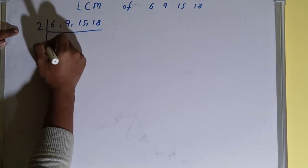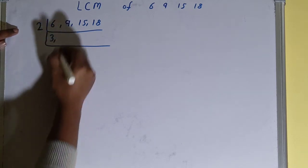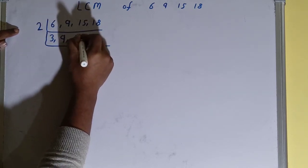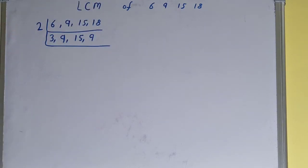This 6 will become 3 on dividing. This 9 is not divisible, so we'll just copy it down. This 15 is not divisible, so we'll copy it down. This 18 is divisible, so it will become 9. Again, if we check, is any of the numbers divisible by 2? None of them, so we go to the next prime number.